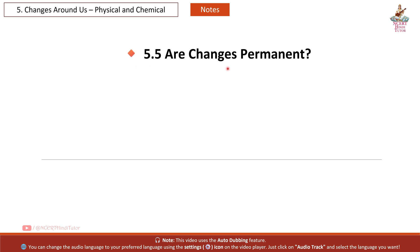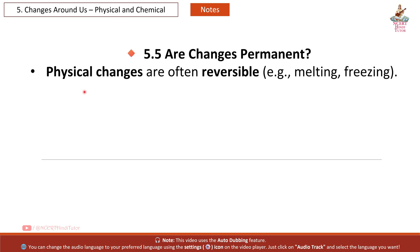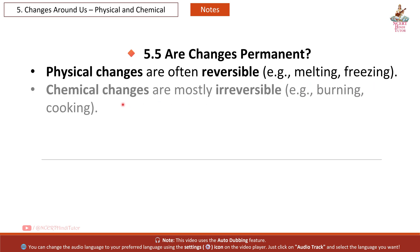Section 5.5: Are changes permanent? Physical changes are often reversible, e.g. melting and freezing. Chemical changes are mostly irreversible, e.g. burning and cooking.